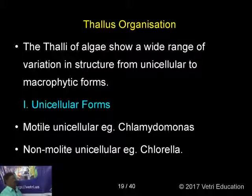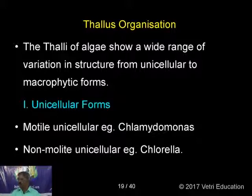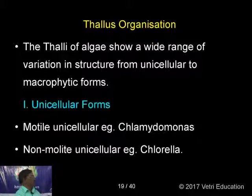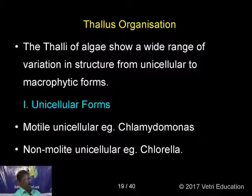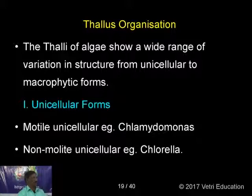Now, thallus organization: there is a wide range of variation in structure, from unicellular to macrophytic forms. Unicellular forms are the most primitive type, where a single cell carries all metabolic functions. There are motile unicellular types — organisms that move with the help of flagella, e.g., Chlamydomonas — and non-motile unicellular forms without flagella, e.g., Chlorella.